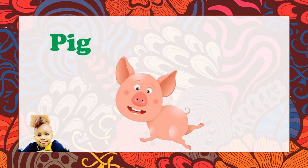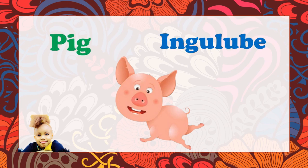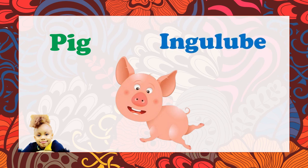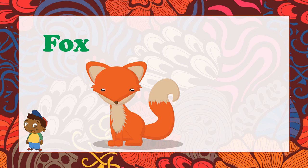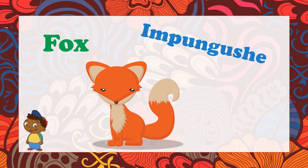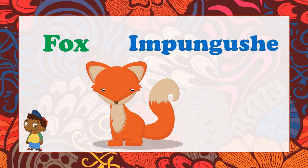And this is a pig. How do you say pig in isiZulu? Ingulube. One more time — Ingulube. This is a fox, right kids? What's a fox in Zulu? Impungushe. Impungushe. Well done.